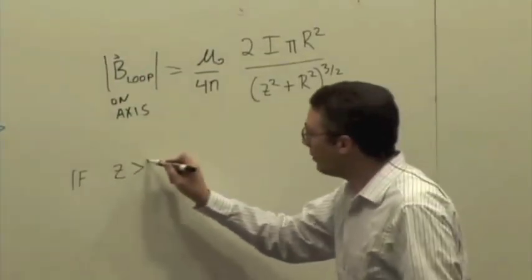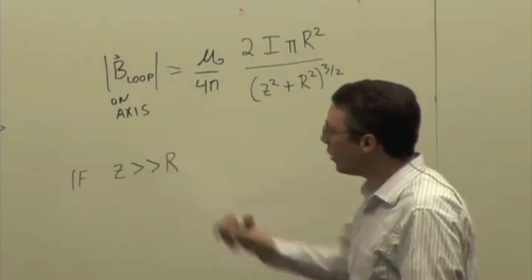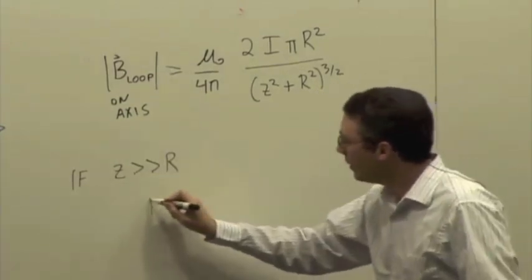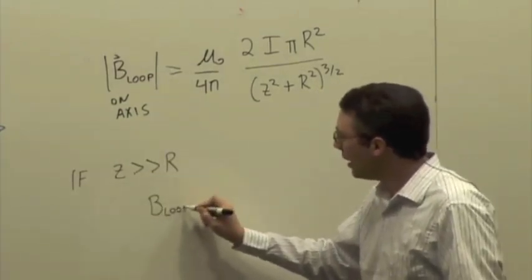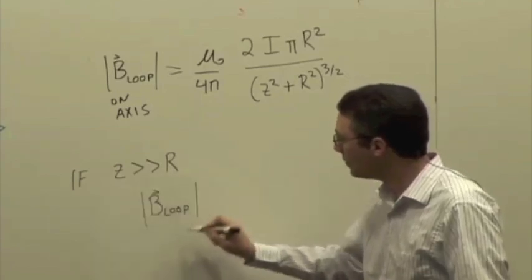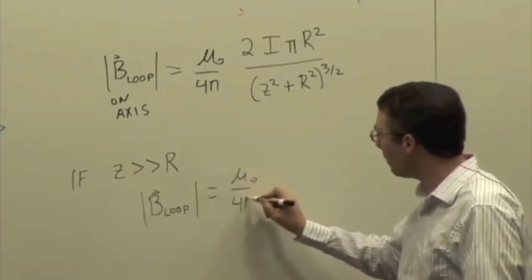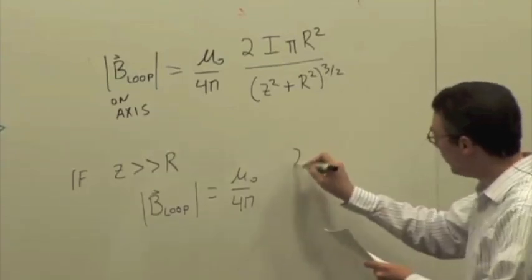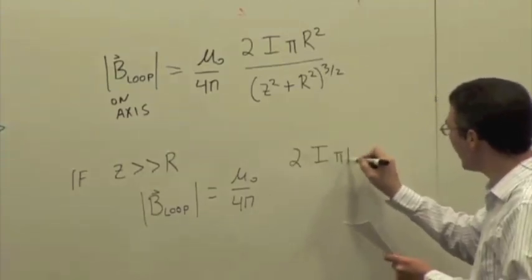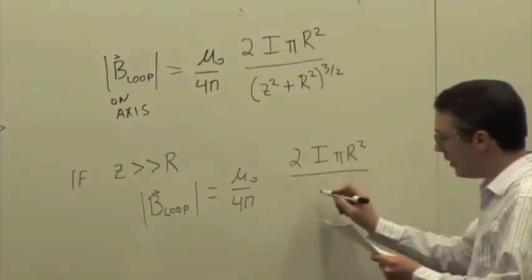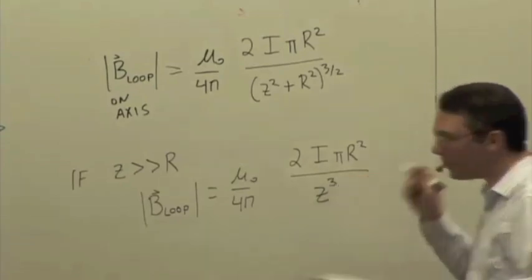If z is much greater than the radius of the loop, then this simplifies to μ₀/4π × 2IπR²/z³. So we get a 1 over distance cubed dependence. It's a dipole, just like we saw for electric dipoles.